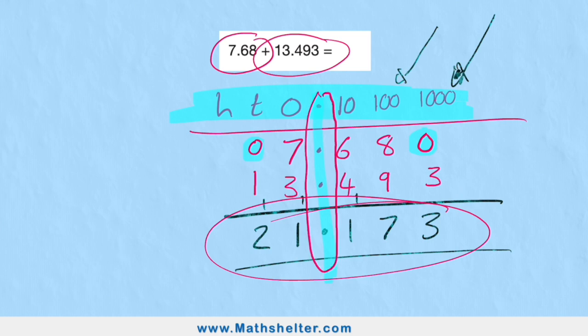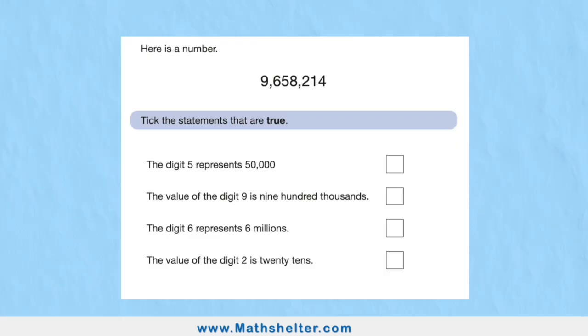Question two: here is a number. These little commas are very helpful because they group our numbers into the hundreds, the thousands, and in this case millions as well. My number reads nine million, six hundred and fifty-eight thousand, two hundred and fourteen.